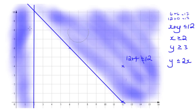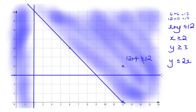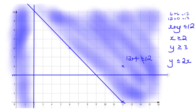Now, y is greater than or equal to 3. That's going to be a horizontal line where all the y-coordinates are 3. I'll draw that line. The unwanted region is anything less than 3, so that would be below the line.